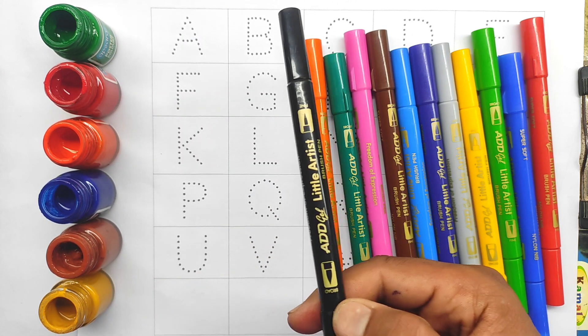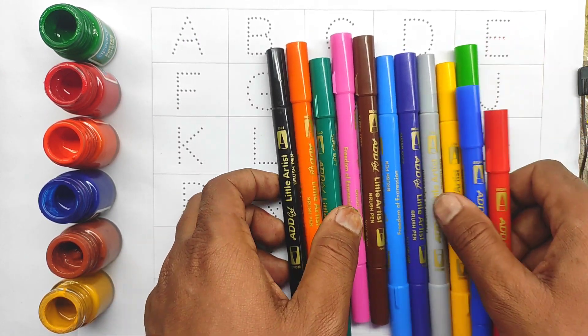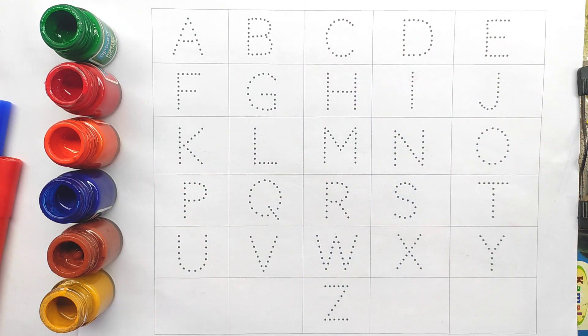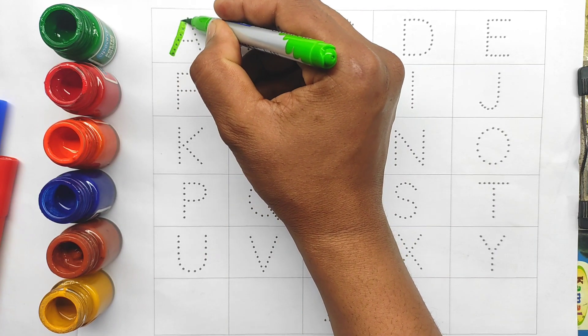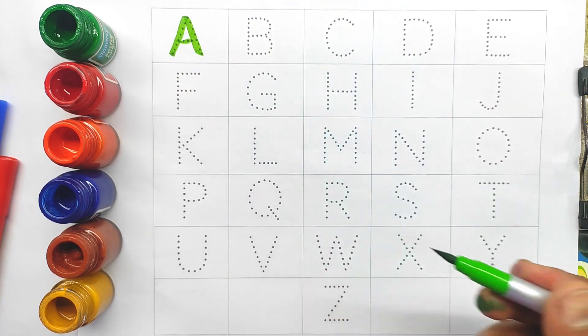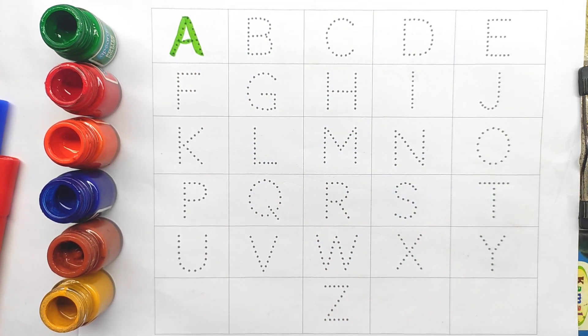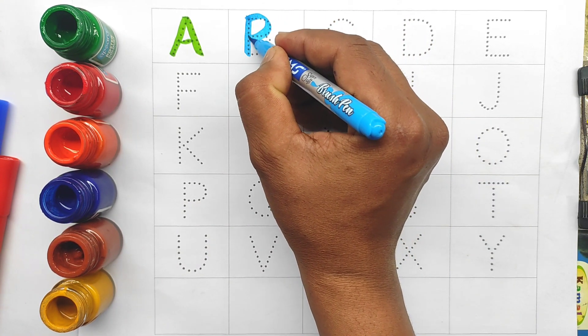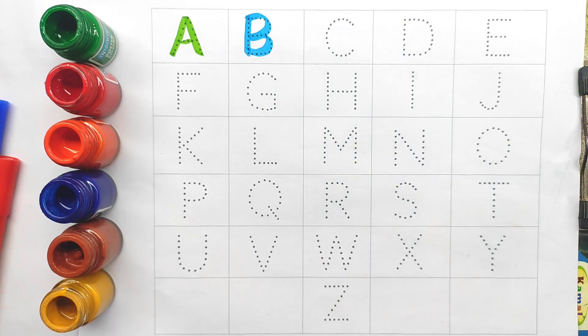And last, black color. A B C D. A, A for Apple, A for Apple. B, B for Banana.